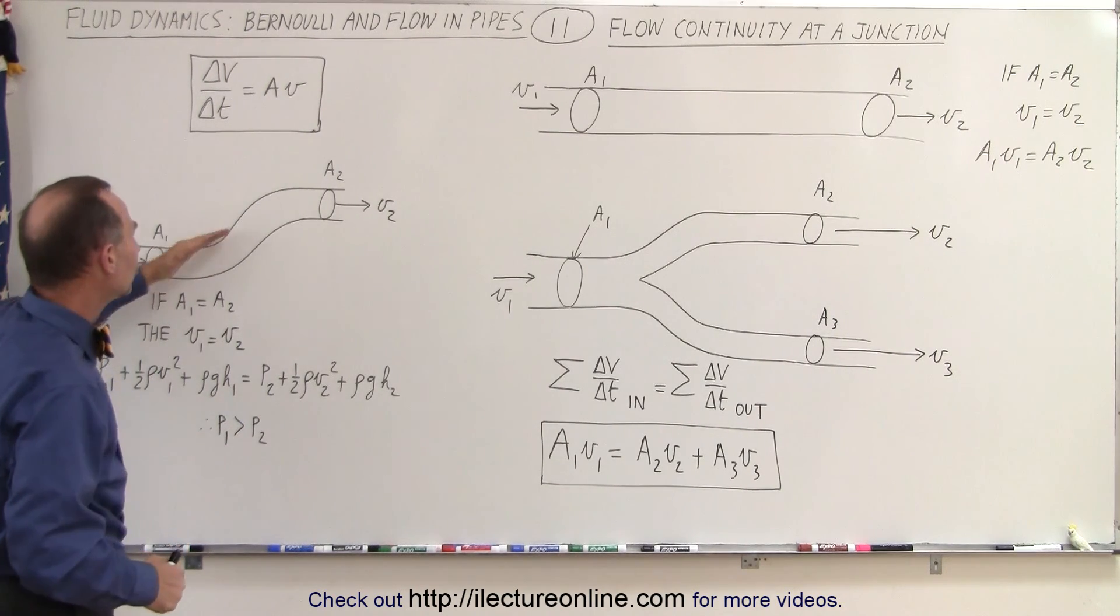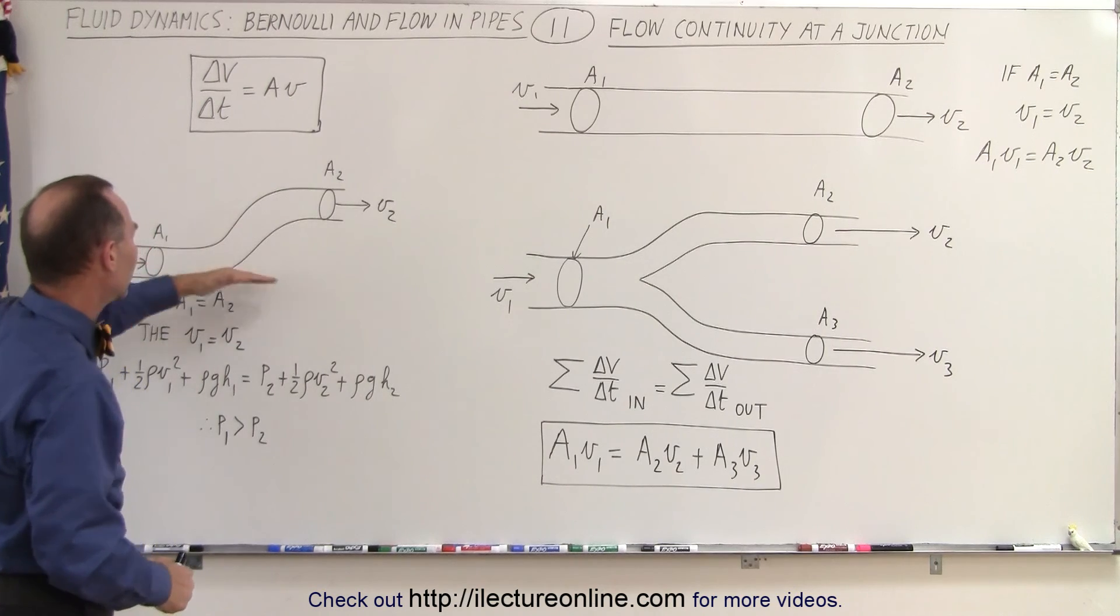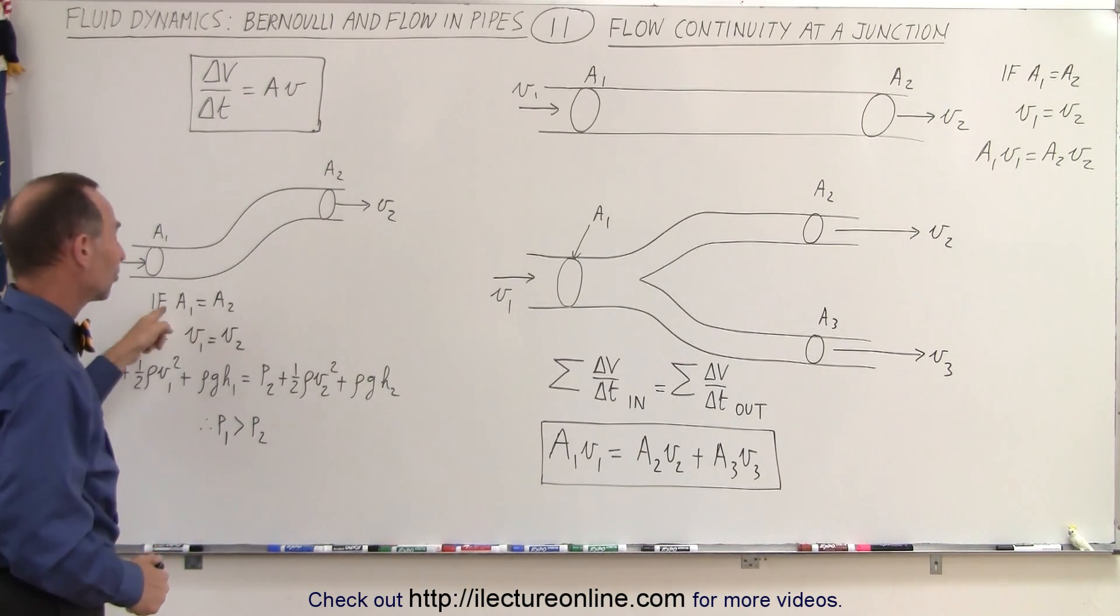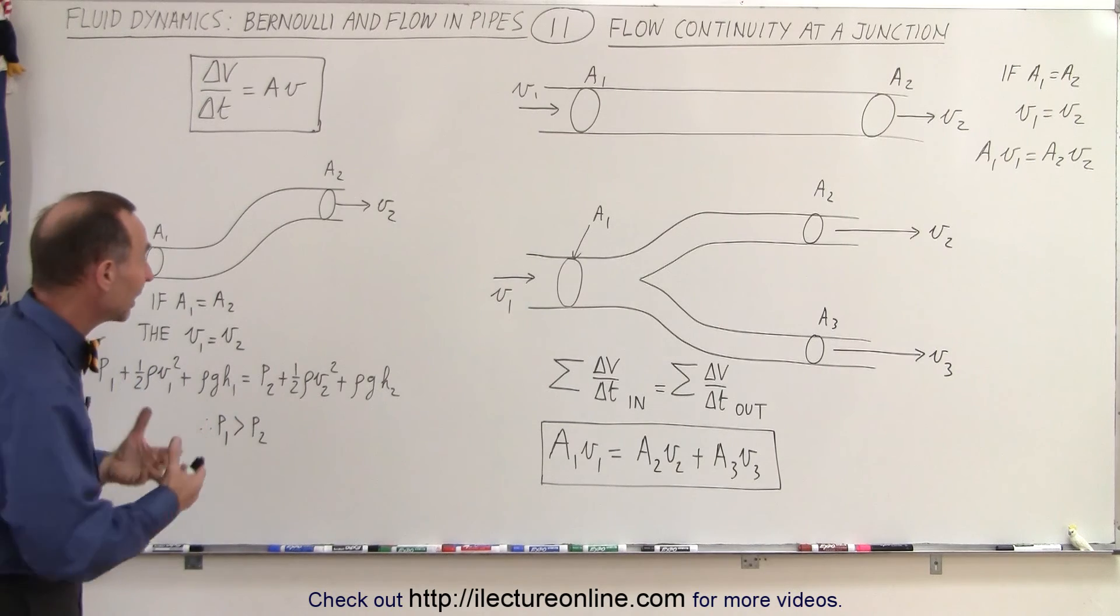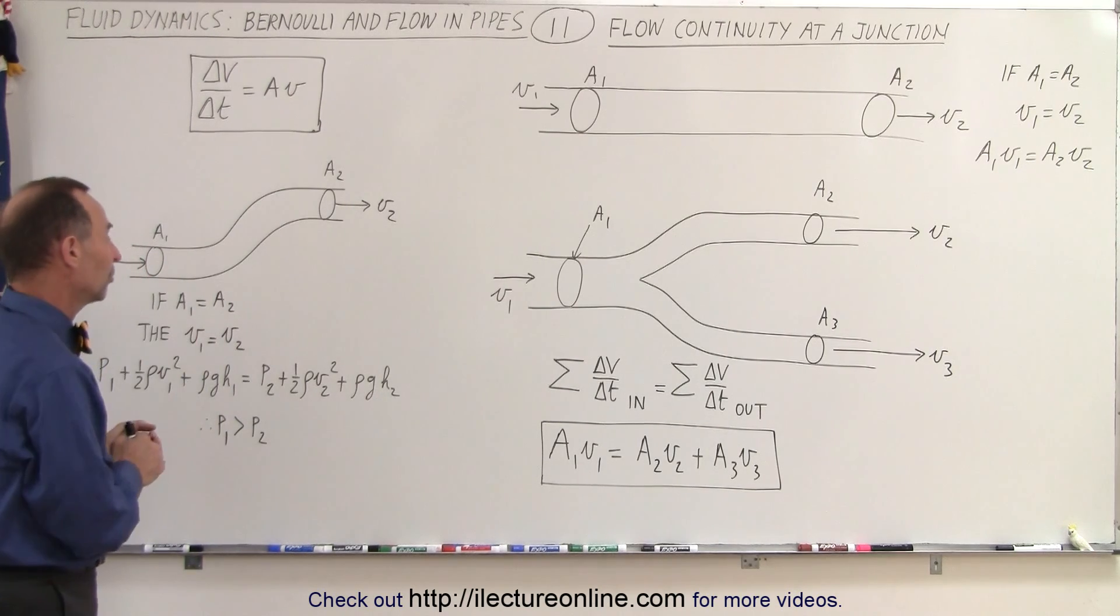Even when the pipe changes elevation, so that this is at a greater height, notice if the cross-sectional areas are the same, then by necessity the velocities must be the same.